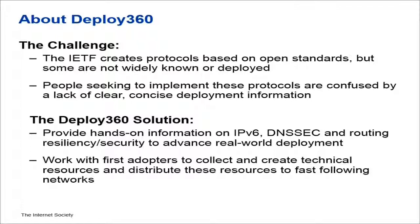Things like IPv6 and DNSSEC, and different pieces of routing resiliency and security, are things that are best for everyone if everyone deploys them, but they're not necessarily at the top of everyone's list to deploy because you can't charge more for these things. They make the Internet better and allow it to continue to grow, but you may not bring in extra revenue by deploying them, at least not on day one.